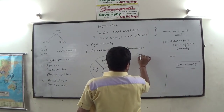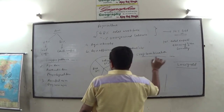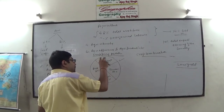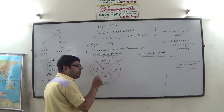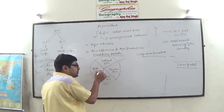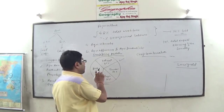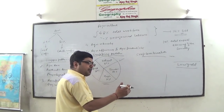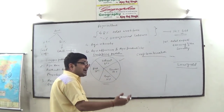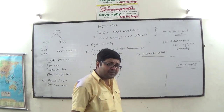Cropping pattern refers to the proportion of land devoted to different crops at a given point of time. Within one agricultural year, suppose the first crop is rice, second crop is wheat. All the crops that enter into combination within one agricultural year constitute crop combination.